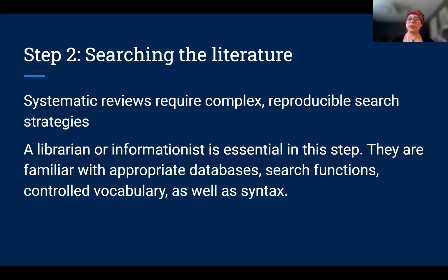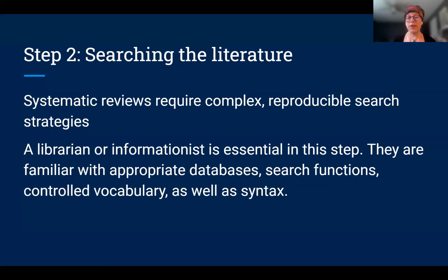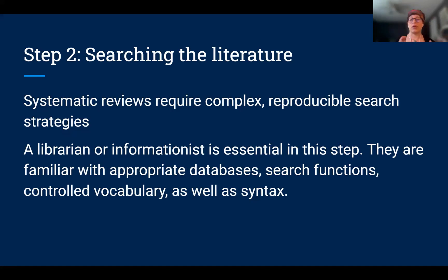Step two is searching the literature. Once your protocol is in place, you'll talk to a librarian, come up with a sample search, and refine it iteratively. Journals require searches to be reproducible — someone reading your article should be able to go into the same databases, do the exact same search, and get the same number of results. Librarians are essential here: we know the databases, the controlled language, and how to translate searches between databases since they use different syntax.